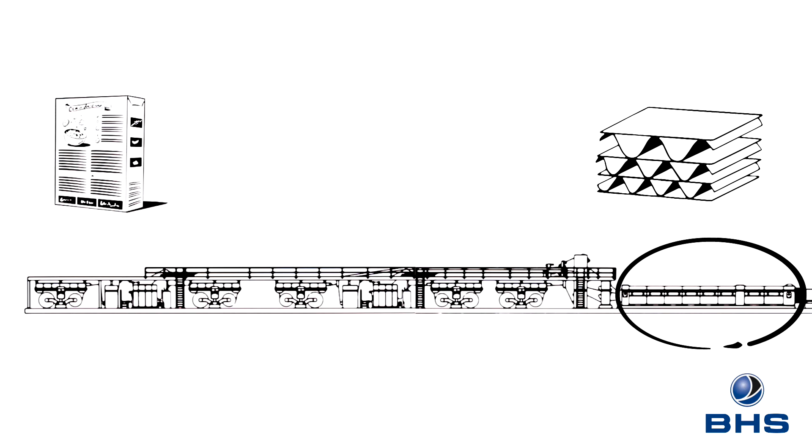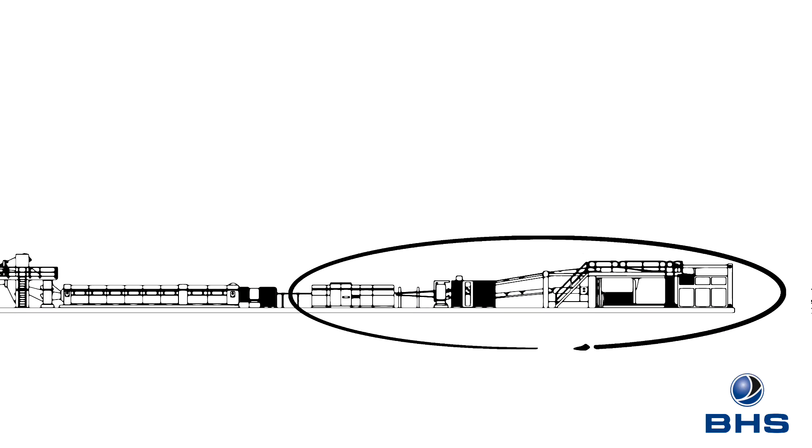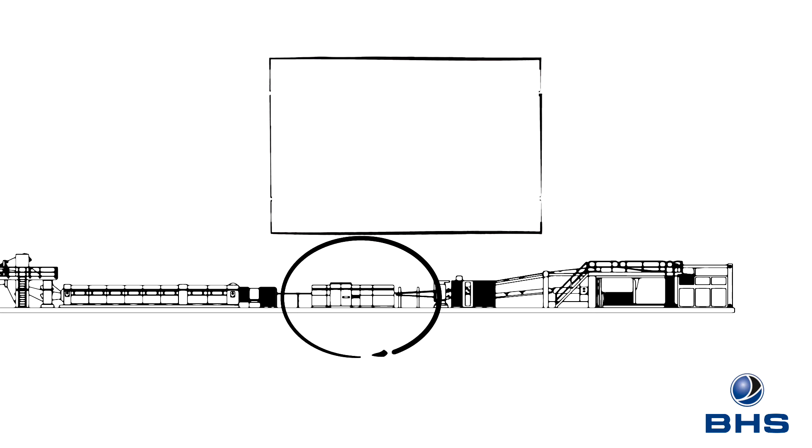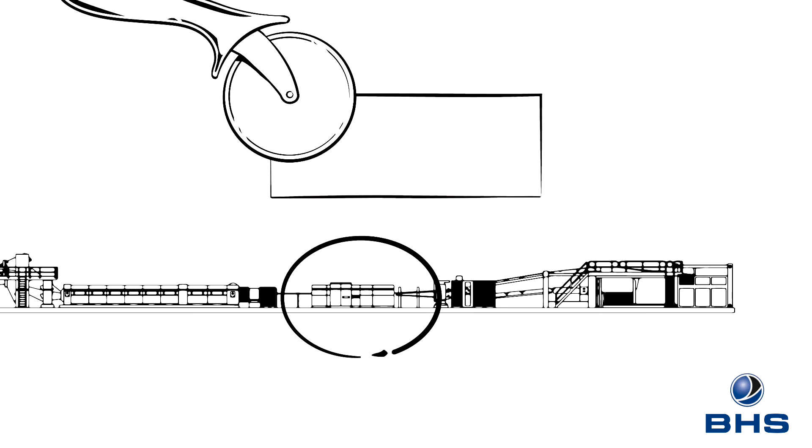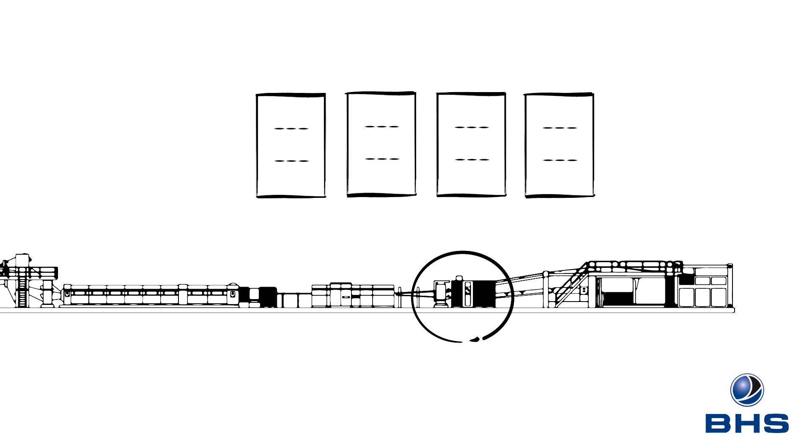After the double facer, the board enters the dry end of the corrugator, where the endless corrugated board is then fed through an automatic slitter scorer. Here, the corrugated board is slit to the width required and scored to ensure exact folding of the box later on. It is then fed through a cut-off knife, which cuts the corrugated board to the exact length required.